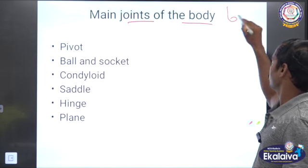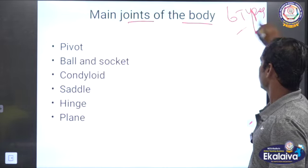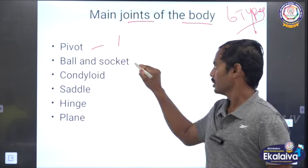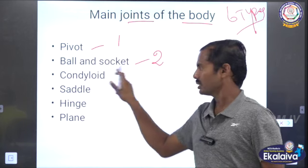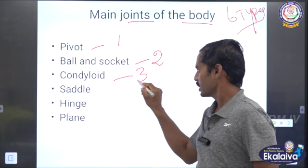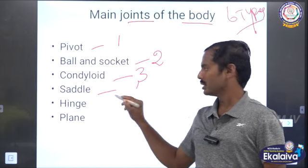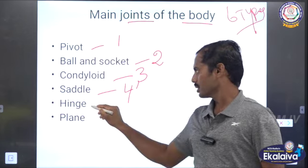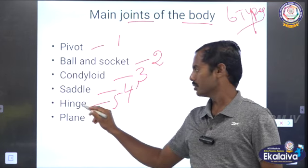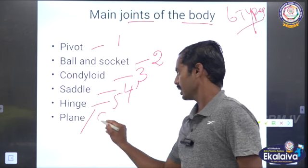There are six types. Number one: pivot joint. Number two: ball and socket. Number three: condyloid. Number four: hinge joint. Number five: hinge joint. Number six: plane joint or gliding joint.